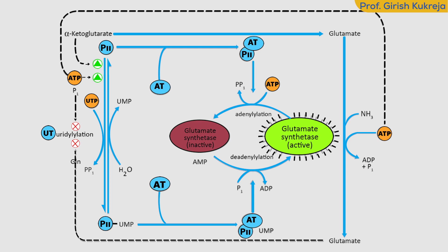The uridylated P2 is also a mediator of activation of transcription of the genes encoding glutamine synthetase, which increases the cellular concentration of this enzyme. While the deuridylated P2 decreases the transcription of the same gene.